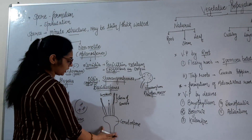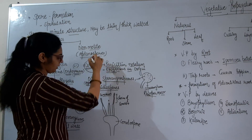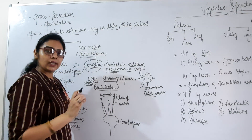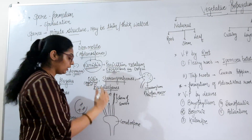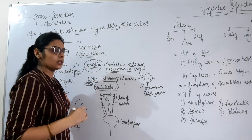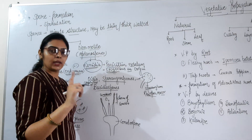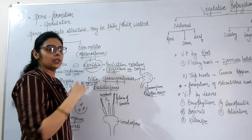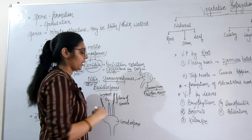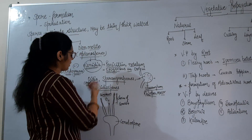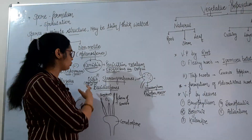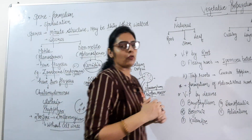Looking at the diagram: conidiospores are formed exogenously on the body — either a single conidium or a chain or group of conidiospores can be formed. The sporangium forms sporangiospores, present in Rhizopus and Mucor. Oidia are internally present and produced by Aspergillus. So that was spore formation.